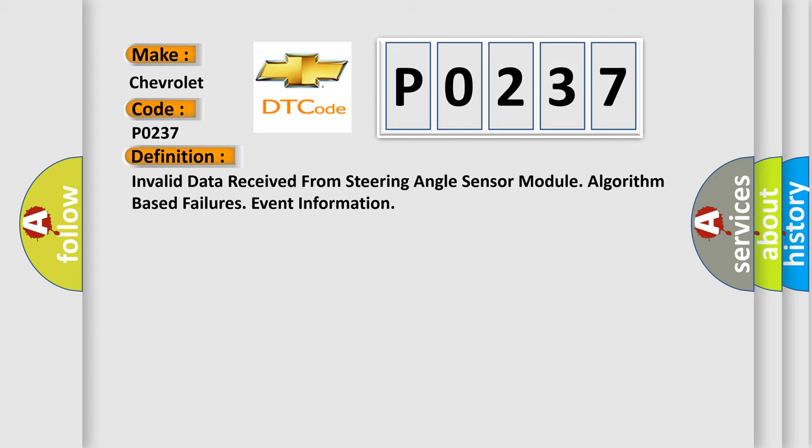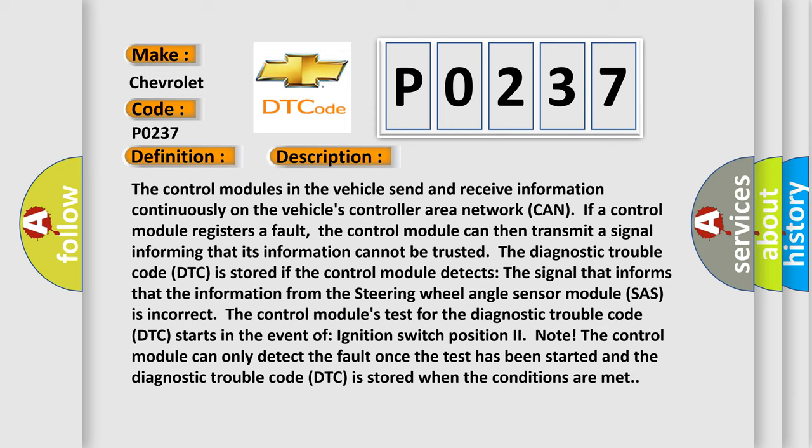Here is a short description of this DTC code. The control modules in the vehicle send and receive information continuously on the vehicle's Controller Area Network (CAN). If a control module registers a fault, it can transmit a signal informing that its information cannot be trusted. The DTC is stored if the control module detects a signal indicating that the information from the steering wheel angle sensor module (SHAS) is incorrect. The control module's test for this DTC starts when the ignition switch is in the on position, and the DTC is stored when the fault conditions are met.